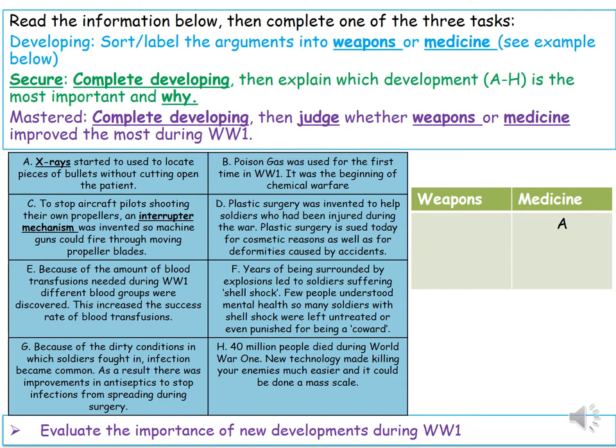Our final task has these eight pieces of information. All of you need to be able to sort or label the arguments into whether they're talking about weapons or medicine, like this green table we have here on this slide. And then, once again, if you find that too easy, please do the secure and the mastered, because that gives you more information to work with when you do your assessments.